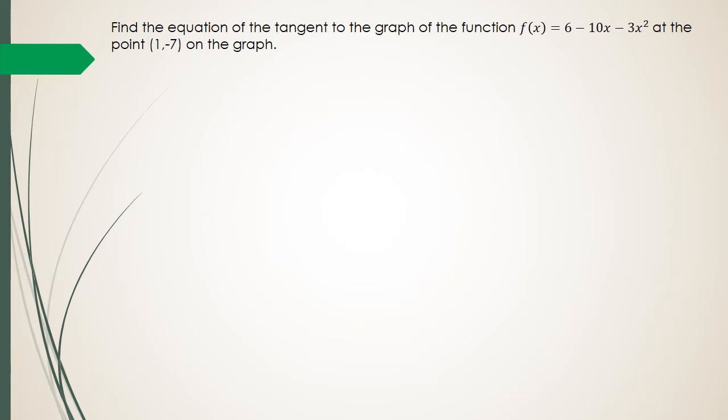Alright, so what we've got is f of x. So, as I told you guys in the earlier video, write down all the things that you have. So, you've actually got f of x, which is 6 minus 10x minus 3x squared.